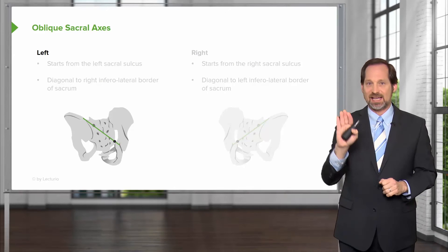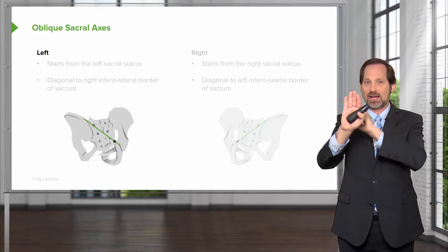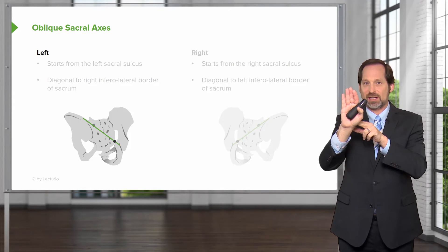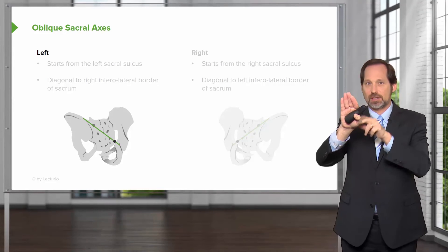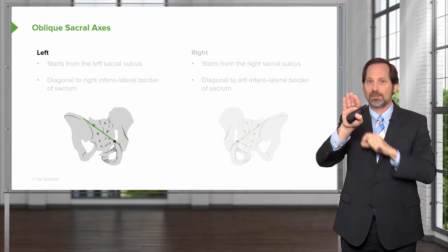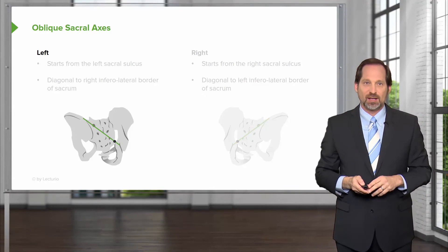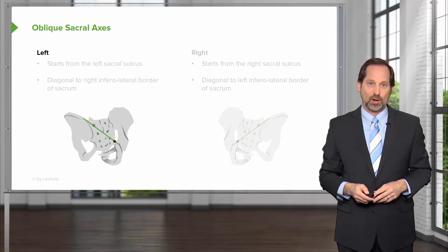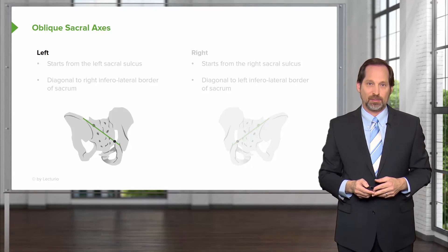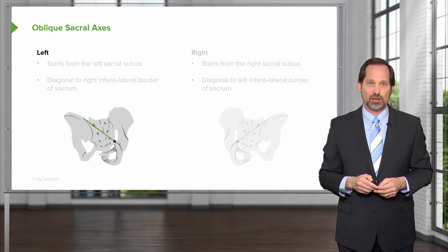On the right oblique axis, it's the exact opposite — the right upper and left lower are not moving, so motion occurs at the top and bottom on the other sides. Naming the oblique sacral axis is important in helping you decide how to treat somebody and figuring out where motion needs to be induced.